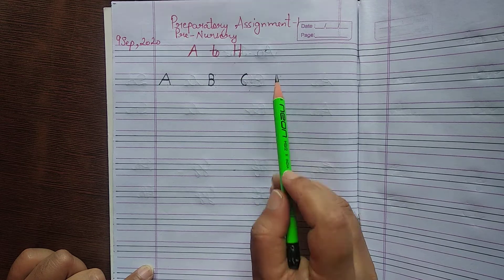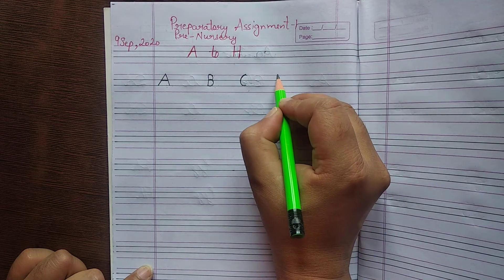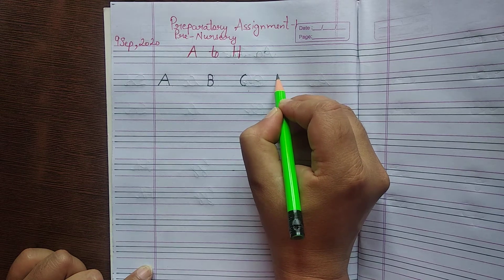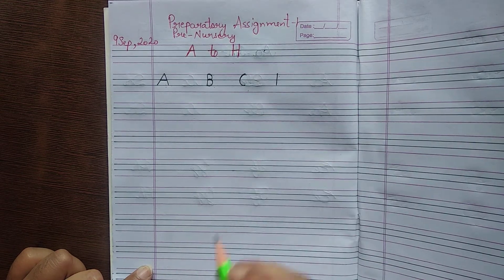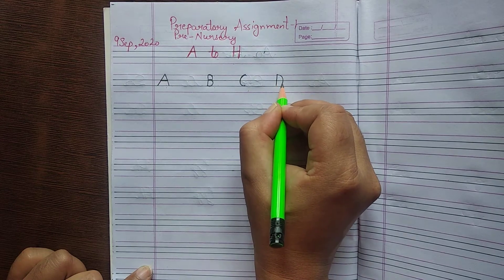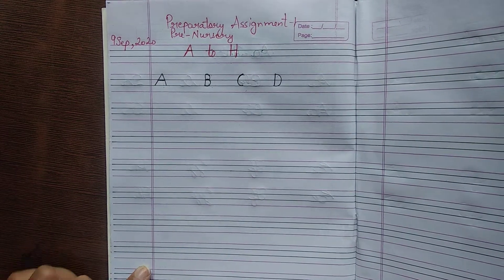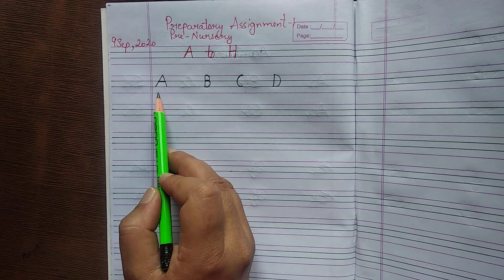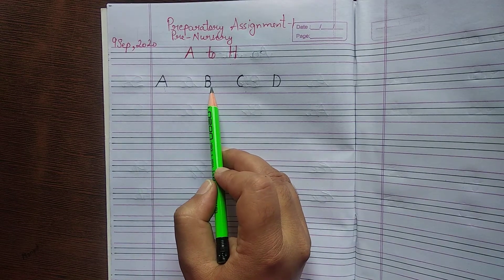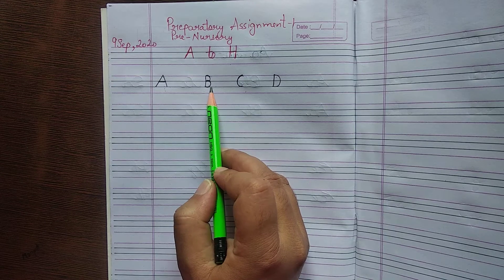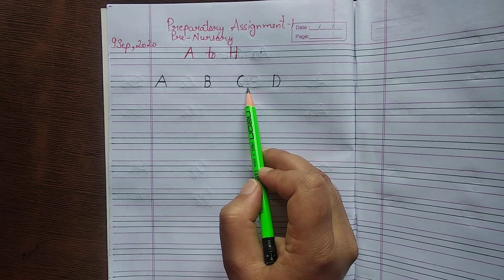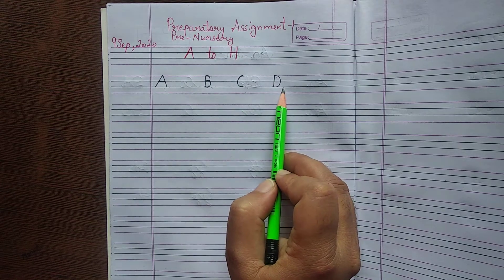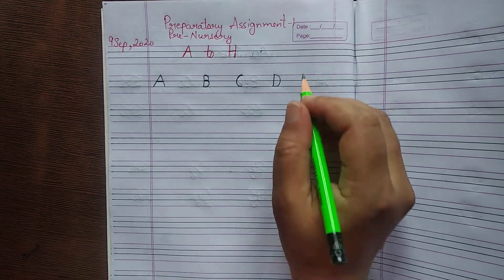Next, D for dog. D for dog. How will you write D? First, standing line, then make a curve like this. A for apple.